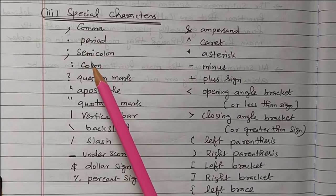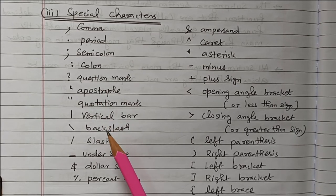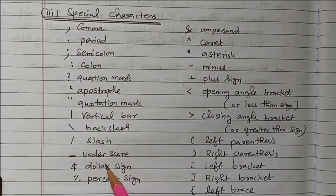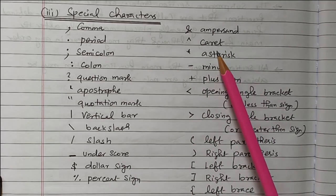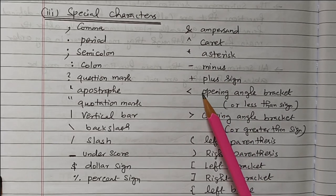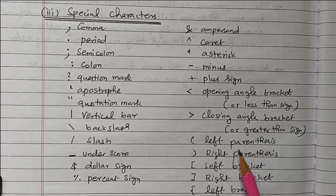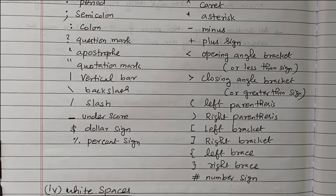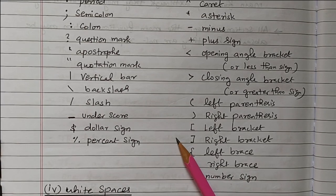The special characters include: comma, period, semicolon, colon, question mark, quotation mark, vertical bar, backslash, slash, underscore, dollar sign, percentage sign, hash, caret, asterisk, minus, plus sign, less than sign (open angle bracket), greater than sign (closing angle bracket), left parenthesis, right parenthesis, left bracket, right bracket (square brackets), left brace, right brace, and number sign. These are all the special characters in the character set of the C program.